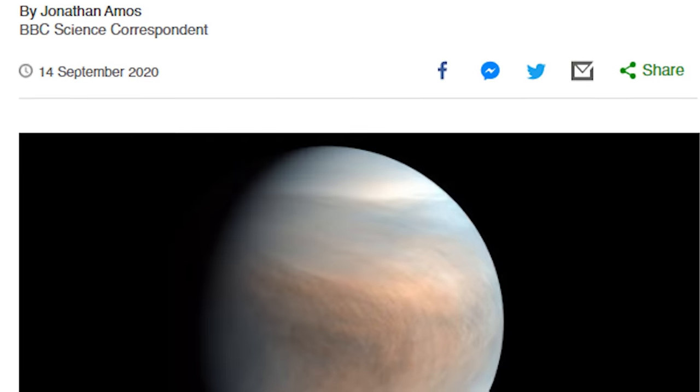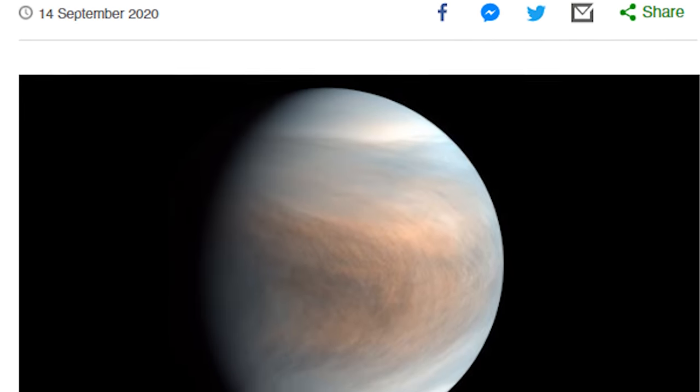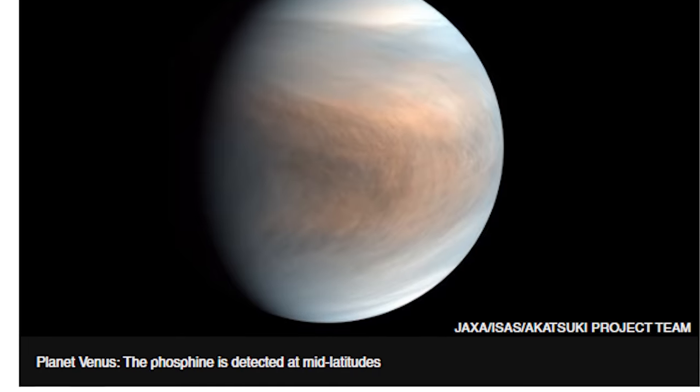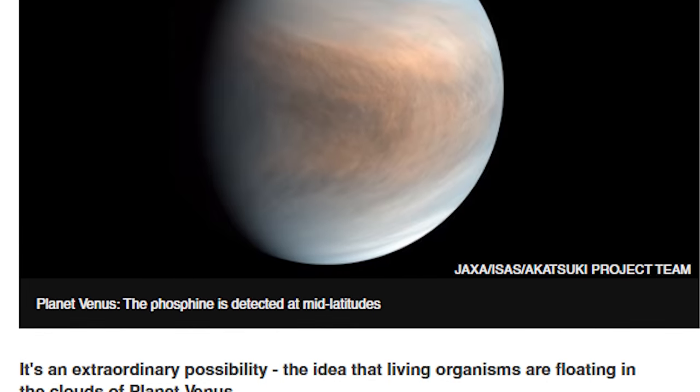The interesting thing about this gas is that it's only seen as a byproduct of life, making it nearly certain that the phosphine on Venus is produced by some kind of lifeform in the planet's thick atmosphere.